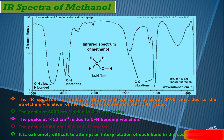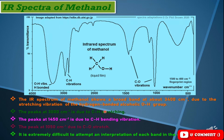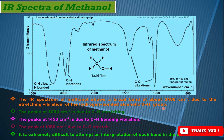The IR spectrum of methanol shows a broad band at about 3400 cm⁻¹ due to the stretching vibration of the hydrogen-bonded alcoholic hydroxyl group. As discussed in the previous lecture, around 3400 cm⁻¹ you can expect the O-H stretching vibration. If you have a broad band, it means the O-H or hydroxyl group is hydrogen bonded.